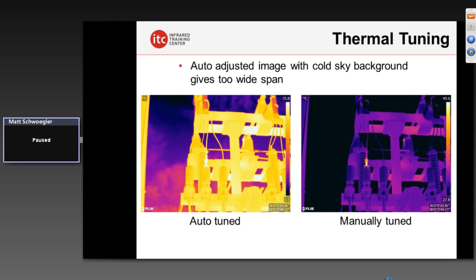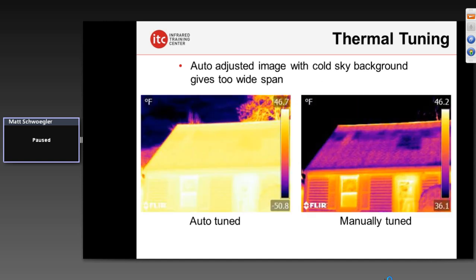We work on this as part of training — getting well-thermally-tuned images as part of the certification process. And it's true for those in buildings too. If you're looking for missing insulation on the roof of a residential home, the manually-tuned image on the right provides much better detail — we actually see that most of that roof appears to be uninsulated. But in the auto-tuned image where we haven't adjusted the scale, we get most of the sky in the frame and that nearly 100-degree span causes us to lose a lot of contrast on the surface of the roof, making it impossible to diagnose what's happening.